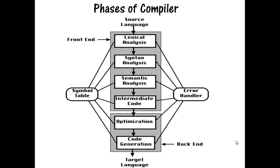Phases of compiler are collected in frontend and backend. Frontend includes lexical analysis, syntax analysis, and semantic analysis. Backend includes intermediate code generation, code optimization, and code generation. Frontend analyzes the source program and produces intermediate code, while backend synthesizes the target program from intermediate code.